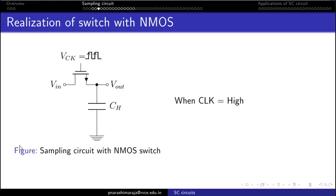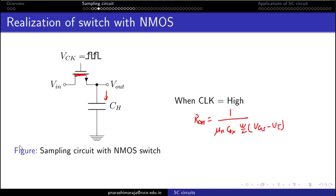When the clock is high, the NMOS creates a channel — it turns ON — and I can sample VIN onto capacitor CH. When this transistor is ON, it poses some resistance. The channel resistance can be modeled as: RON = 1 / (μn·Cox·(W/L)·(VGS − VT)).